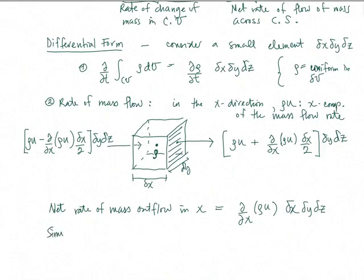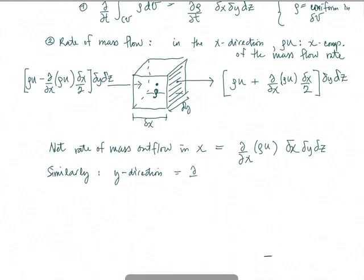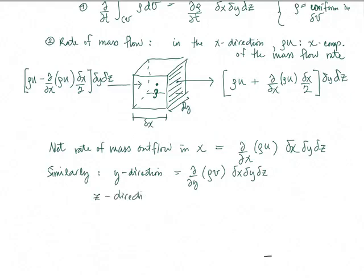Similarly, we can get the other two directions. In the y direction, the net rate of mass outflow is going to be d/dy of rho*v — which represents the y component of the mass flow rate per unit area — times dx*dy*dz. And in the z direction, the net rate of mass outflow is equal to d/dz of rho*w times dx*dy*dz. Therefore, the net rate of mass outflow is the sum of these three terms.